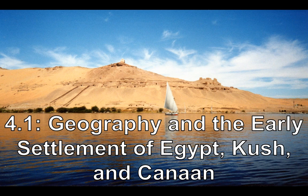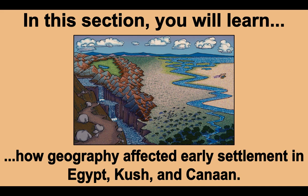Here we have an image of the Nile. You see a boat floating and some desert land in the background. In this section, you will learn how geography affected early settlement in Egypt, Kush, and Canaan. This is an artistic picture showing some different geographic features: mountains, rivers, plains, and maybe a little bit of desert on the right.